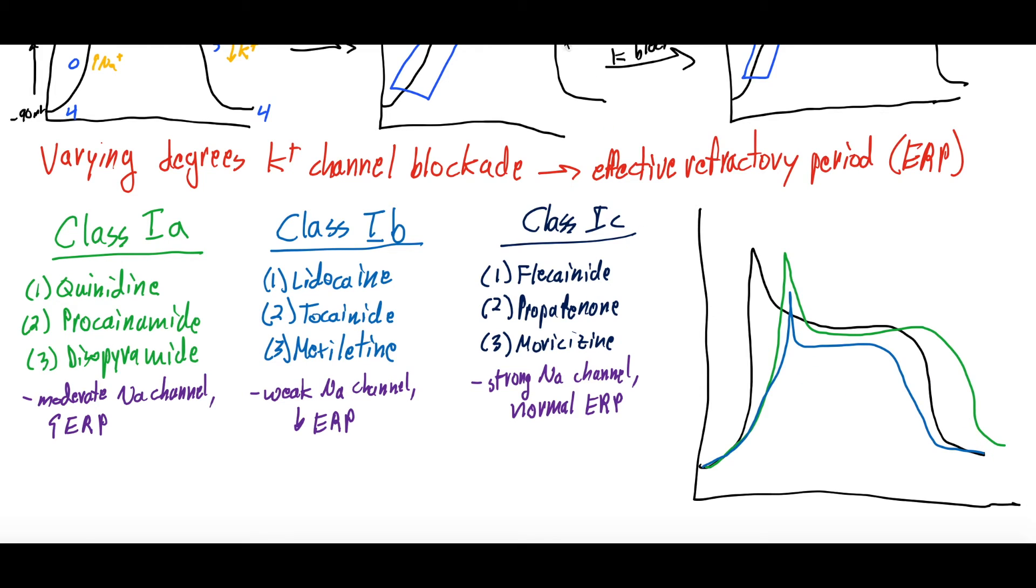And then Class 1C has a strong sodium channel blockade and then a normal effective refractory period. So what you can see is it's a strong sodium channel blockade and then a normal effective refractory period. And that one's a little harder to see just because it's similar to the black color that we used for the main line here, but this would be 1C.